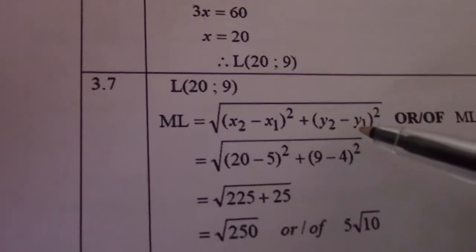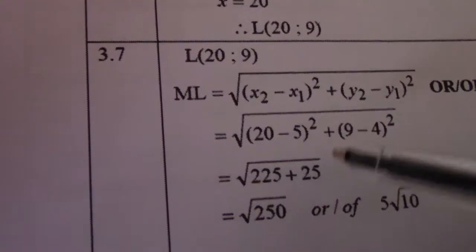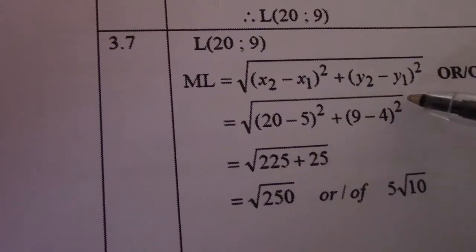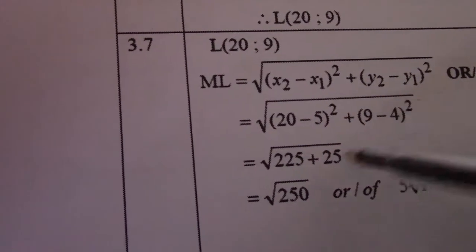ML. By now you should know the formula. 20 minus 5 all squared plus 9 minus 4 all squared. That gives me 15 squared equals 225, 5 squared equals 25.